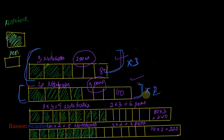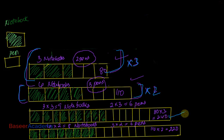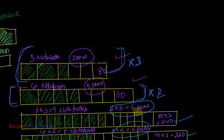After multiplying: first situation gives 9 notebooks and 6 pens costing 80 × 3 = ₹240. Second situation gives 8 notebooks and 6 pens costing 110 × 2 = ₹220. Both have 6 pens. The cost of 9 notebooks and 6 pens is ₹240; the cost of 8 notebooks and 6 pens is ₹220.